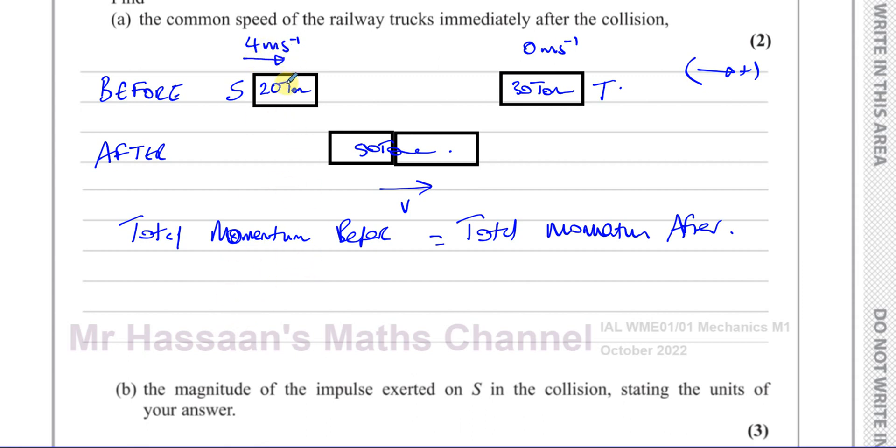So we can see that for S, its momentum before the collision is its mass times its velocity. So it's 20 tonnes. We can write that as 20,000 times 4 plus, and here you're going to have 30,000 times its velocity, which is 0. And that's equal to the total momentum after the collision, which is 50,000 times V, what we have to find. So this is going to give us 80,000 plus 0. So it's 80,000, basically.